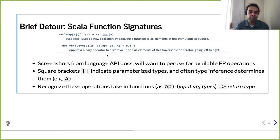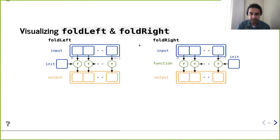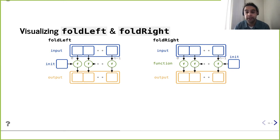For fold left: it takes in an operation that is a binary operator — takes two arguments and returns one. The return type can be different than the input type. Originally the sequence was type A, parameterized on type B. We take an initial element (often called z for zero) and our operator takes the accumulated amount so far and produces a new amount so far. So each invocation produces the running result. Does that mean fold left is very sequential? Yes, it is. You're literally saying I want these things done in this particular order.